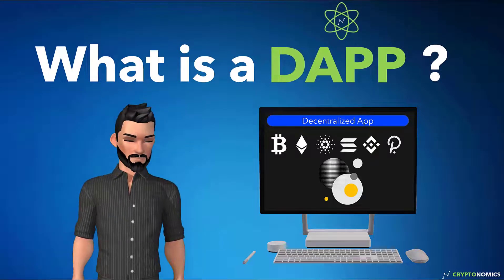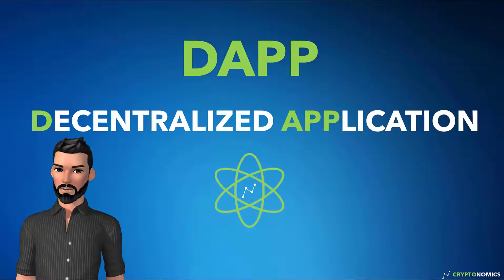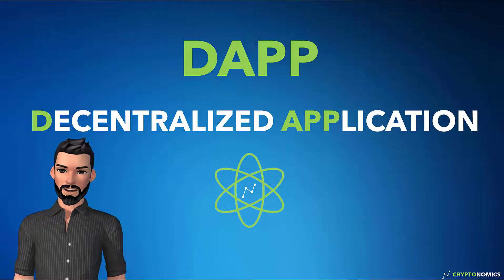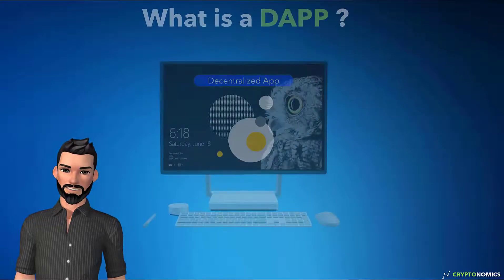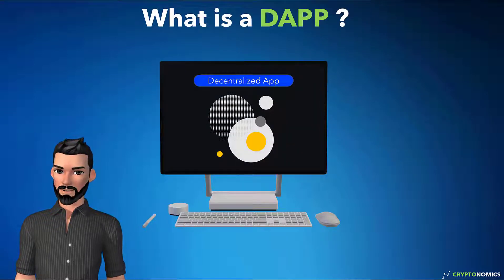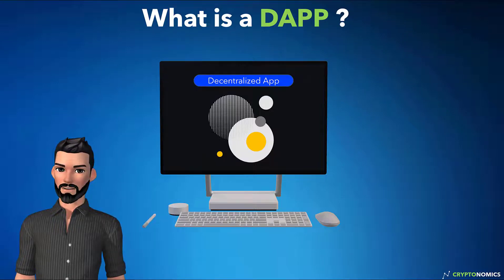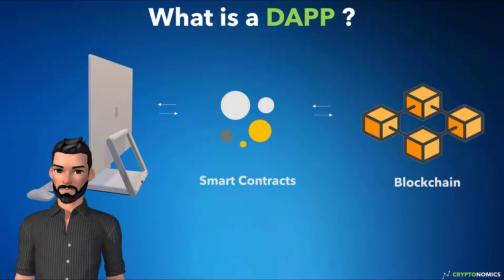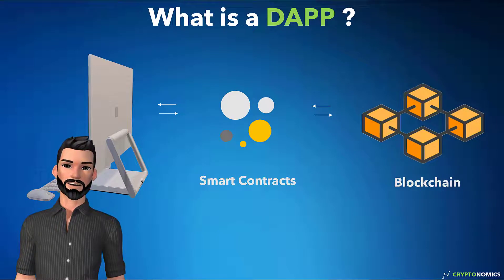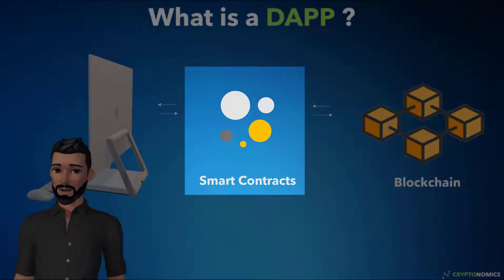What is a DAP? A DAP stands for Decentralized Application. In the context of blockchain, DAPs are interfaces that interact with the blockchain through the use of smart contracts. The smart contract code lives on the blockchain and runs exactly as programmed.